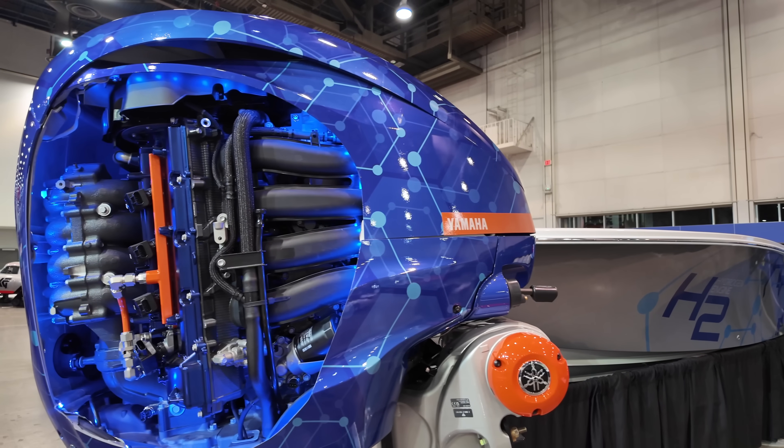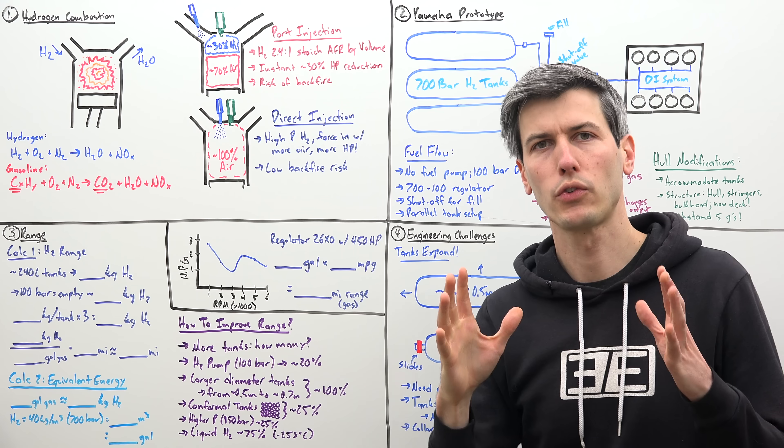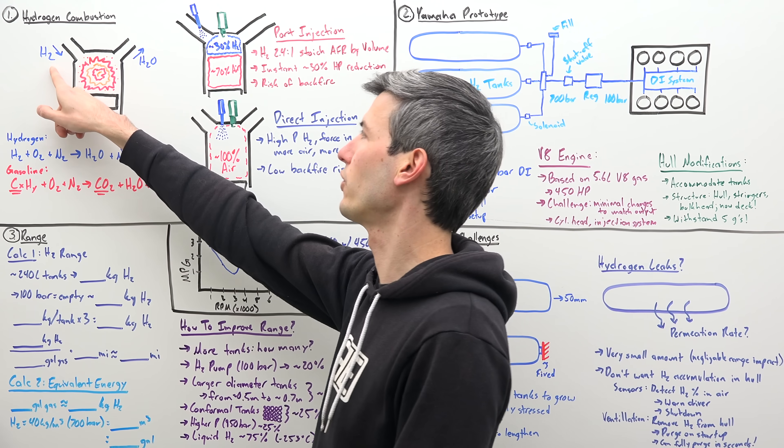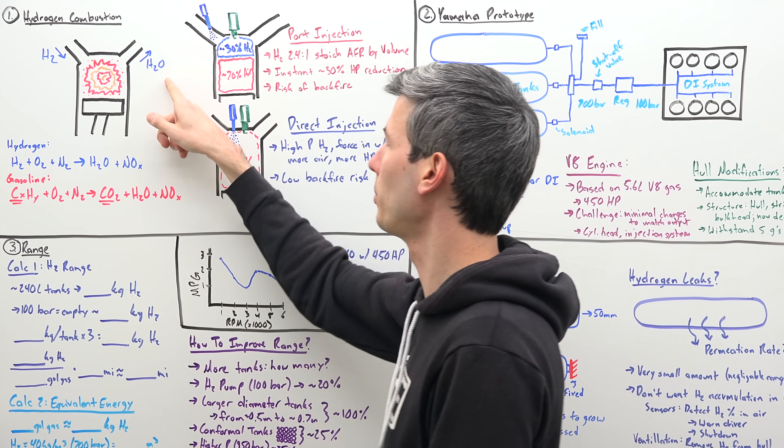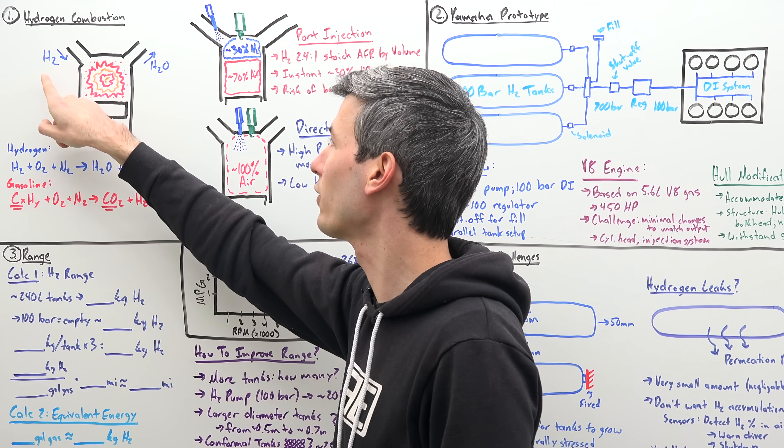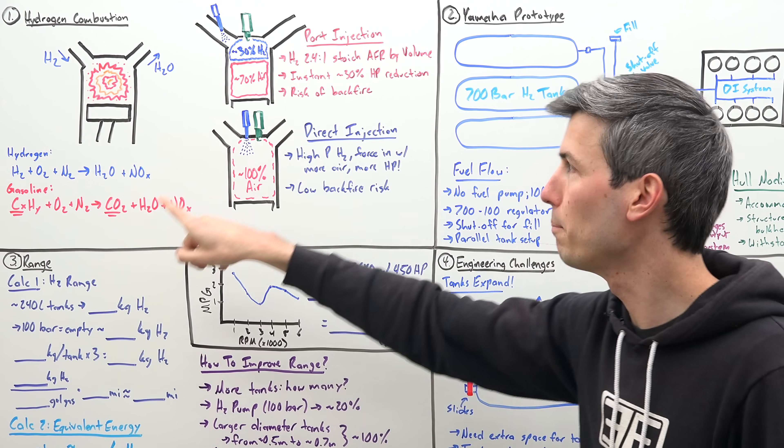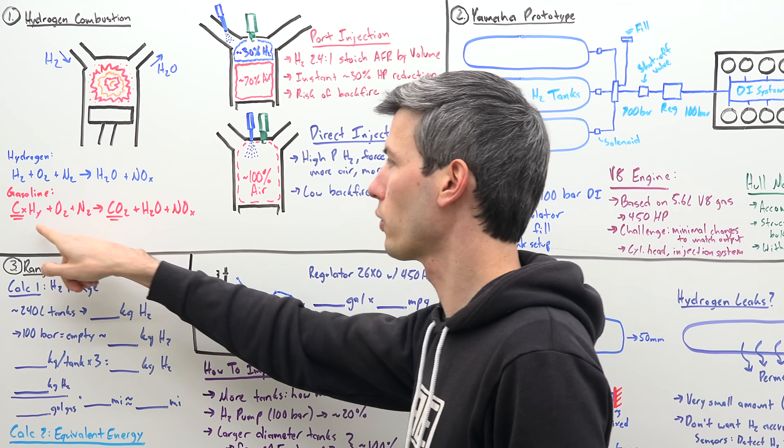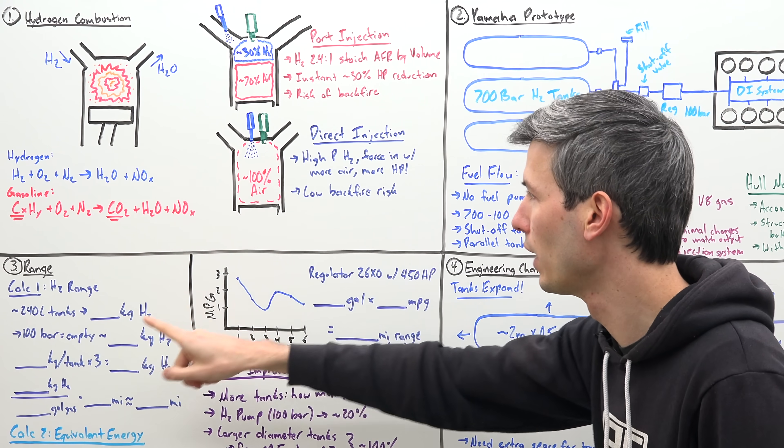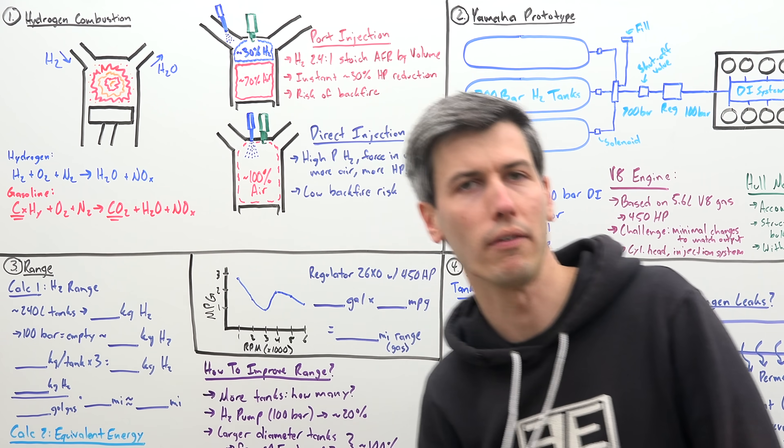So the big perk of using hydrogen as your fuel source is that the main emission of combusting that hydrogen is going to be water. So if you don't have carbon in the fuel, well, then the emissions from that fuel are not going to have carbon in them, unlike gasoline, of course, which has carbon in the fuel, and thus CO2 is a big part of the emissions.